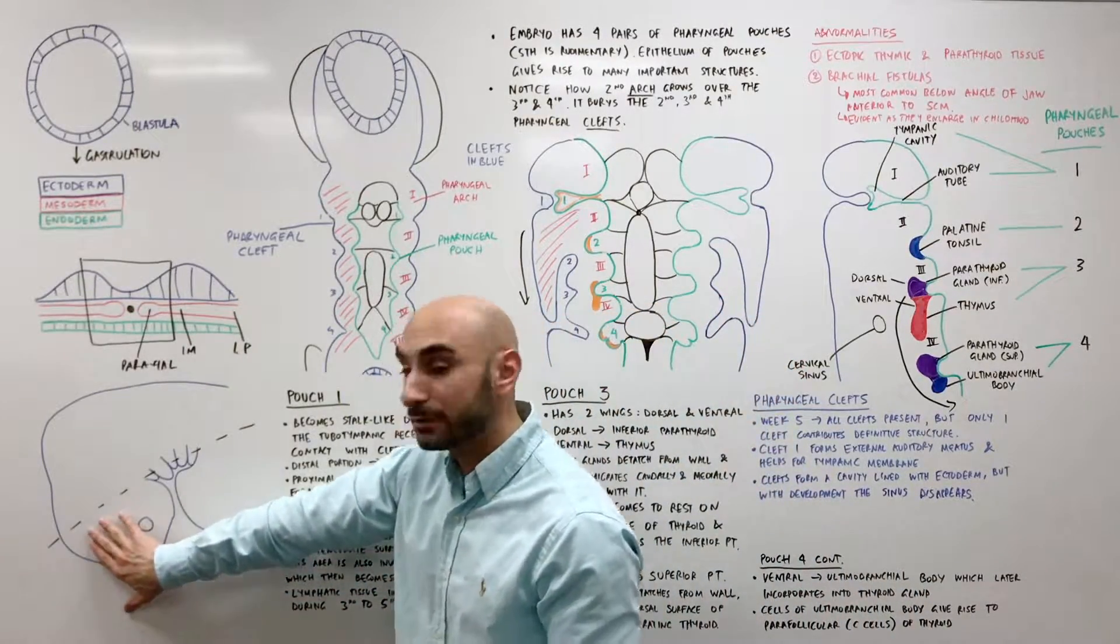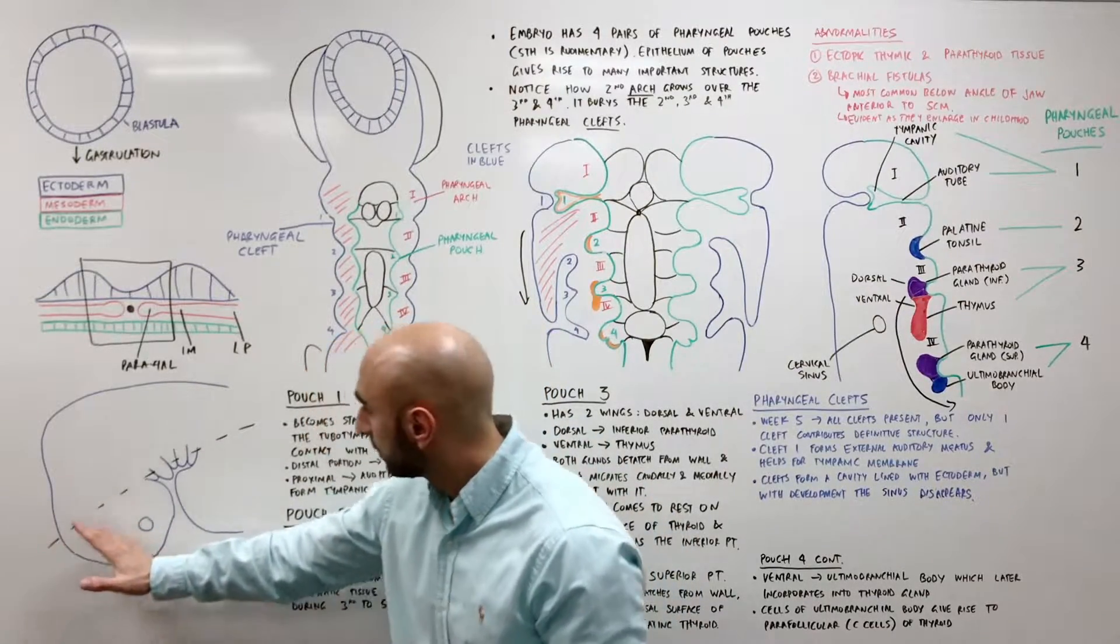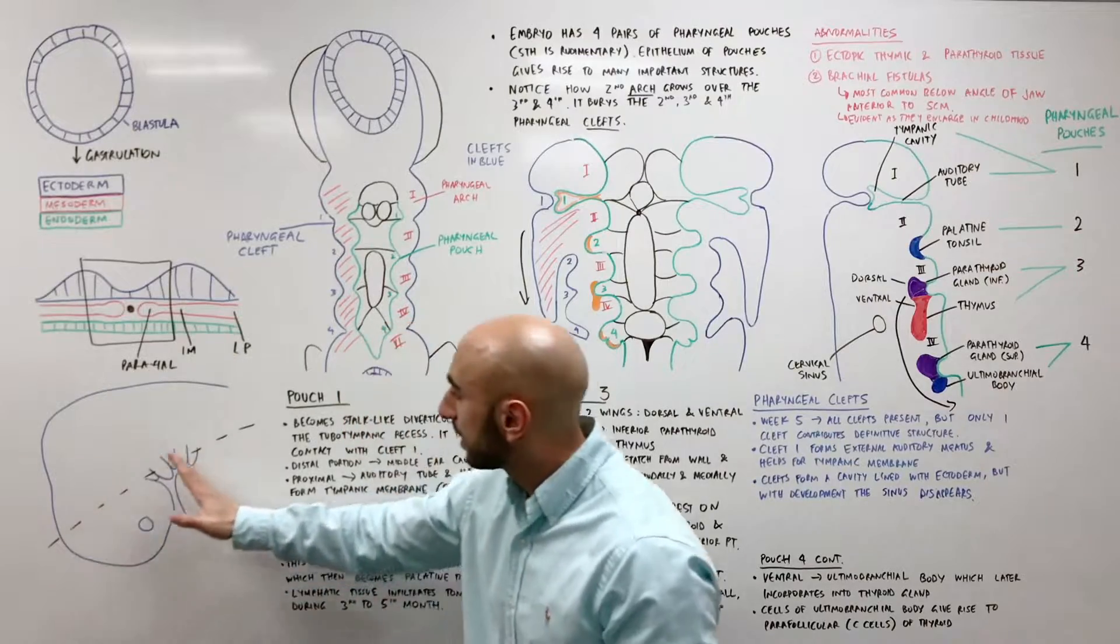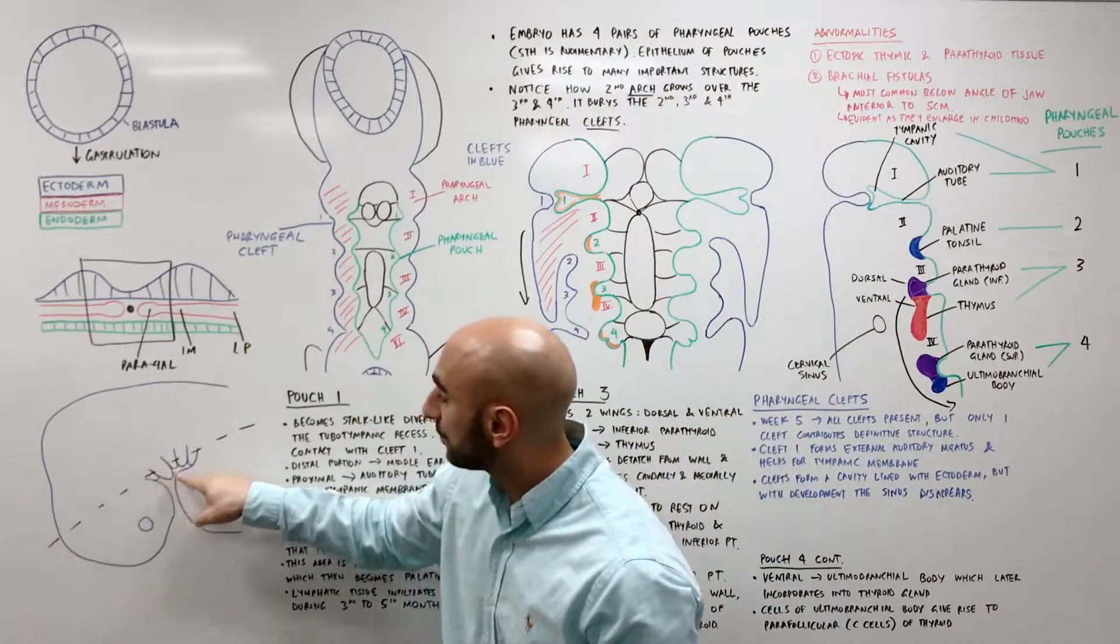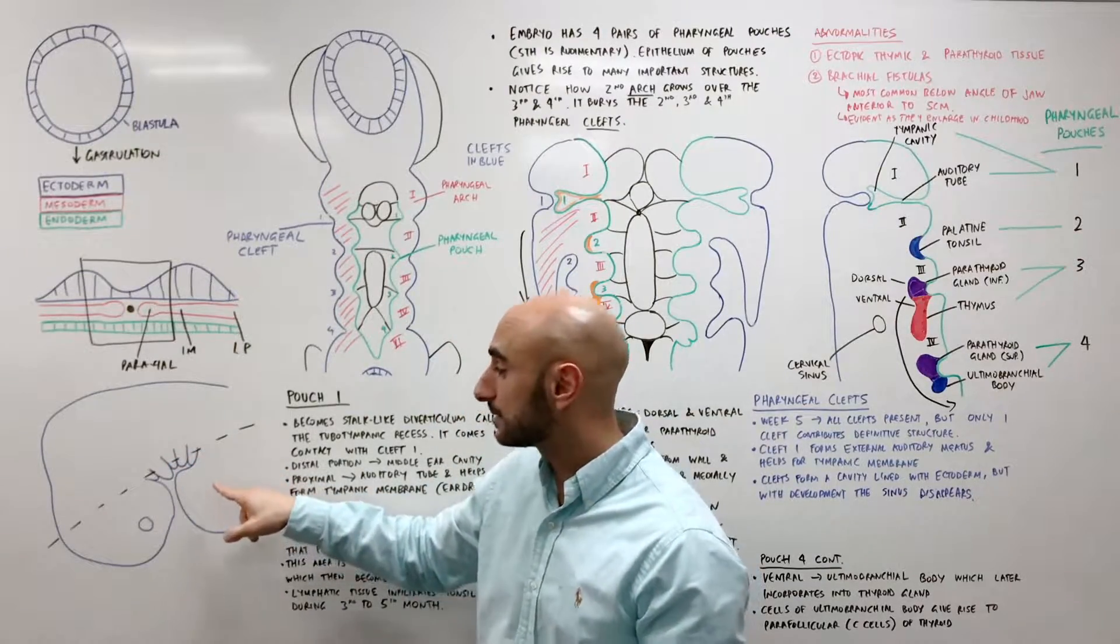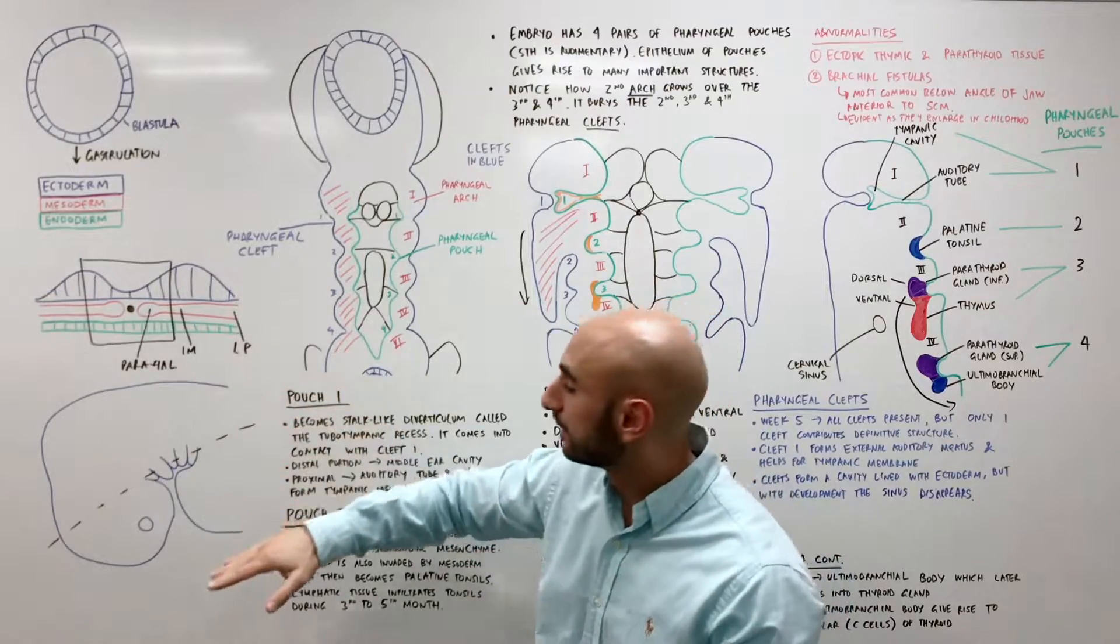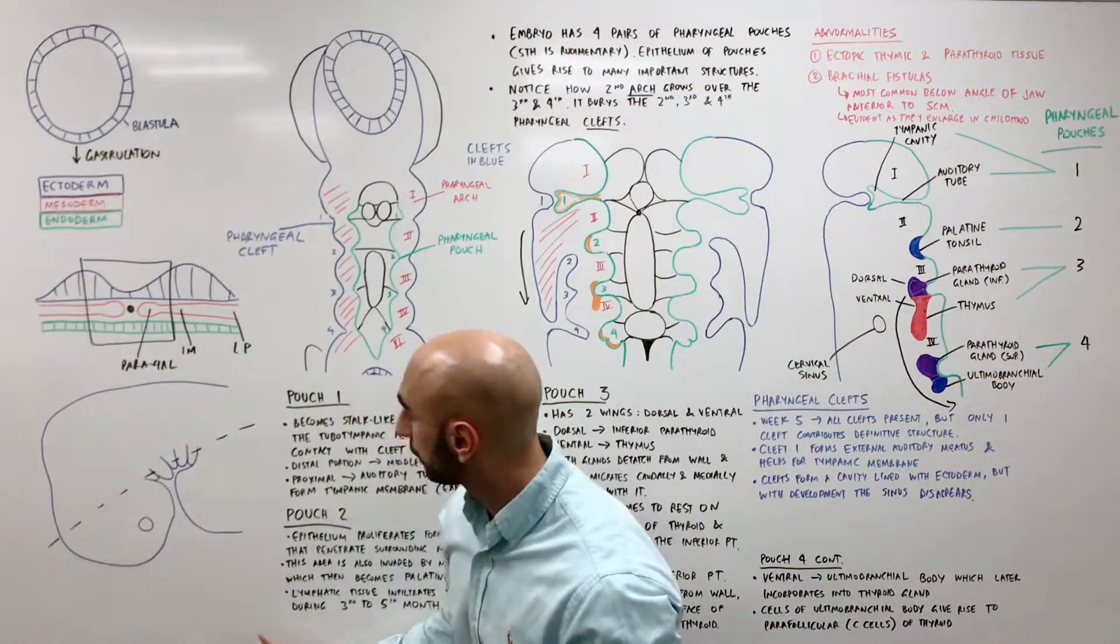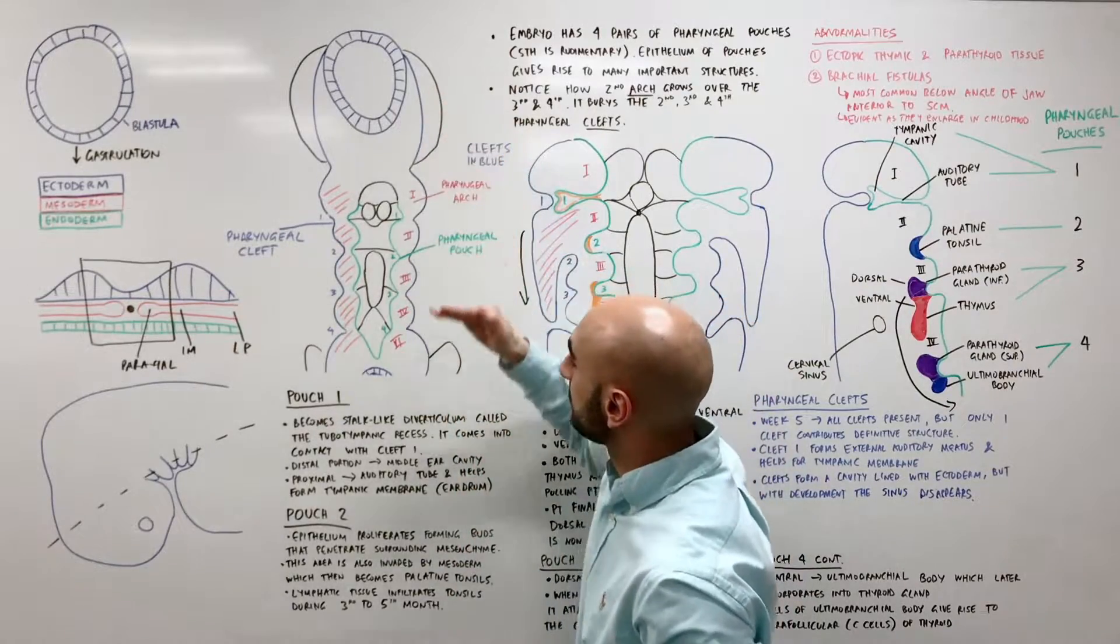We have an embryo right here with its cephalic or head portion at the bottom here and its tail or the cordial bit here and we have the gill looking thing which is the pharyngeal arches and we've drawn a black dotted line to cut it. So we're going to cut it here and look this way and we're going to have this. This is the top, this is the bottom.